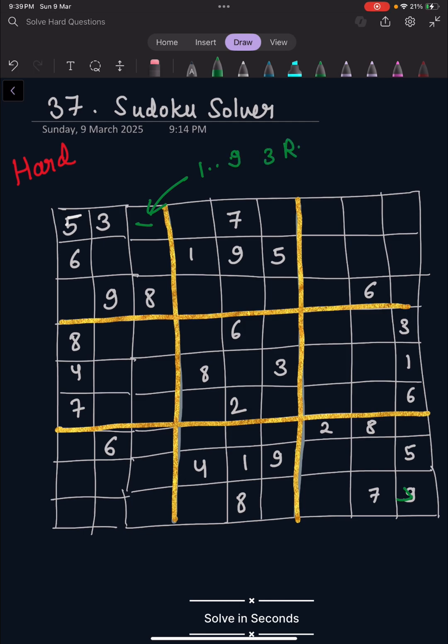We follow three rules: First, the number is not appearing in the same column. Second, it is not appearing in the same row. Third, it is not appearing in the same block. For example, we can fill one here because it follows all the rules, but we can't fill one here because it appears in the same row.